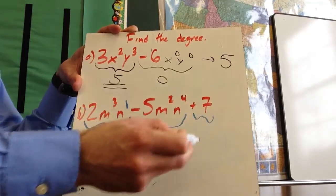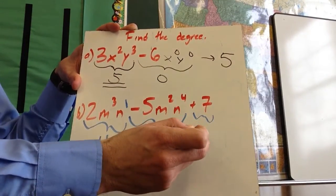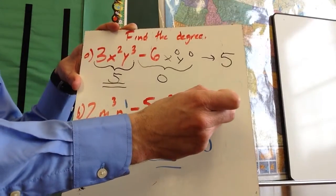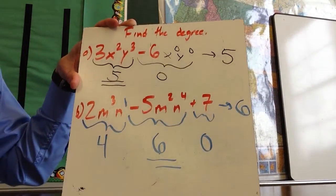And then this, the positive seven, is just a zero. So I'm looking for the highest one, which is a six. So this polynomial is to the sixth degree.